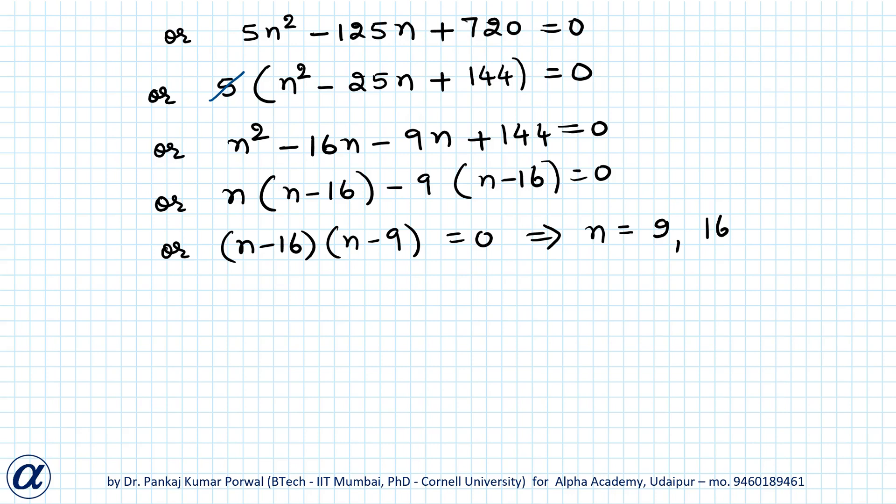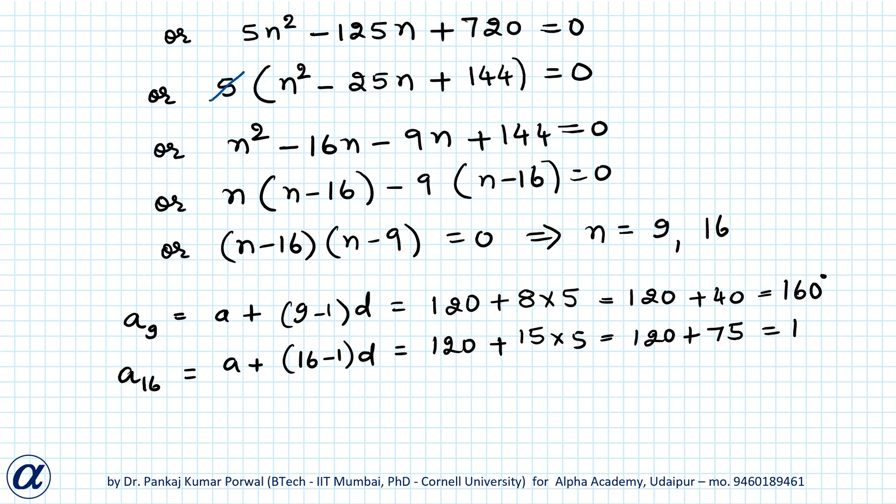Now we have to check whether both answers are acceptable or not. So I will find the last angles in both the answers, that is the 9th and 16th term of our AP. A9 will be a plus 9 minus 1 into d, which equals 120 plus 8 into 5, which is 120 plus 40 equals 160 degrees. And A16 will be a plus 16 minus 1 times d, which equals 120 plus 15 into 5, which is 120 plus 75, which is 195 degrees. This 195 degrees is greater than 180 degrees, which is not acceptable for a convex polygon. So 16 will not be our answer. Our answer will be n equals 9. So we have a 9-sided polygon.